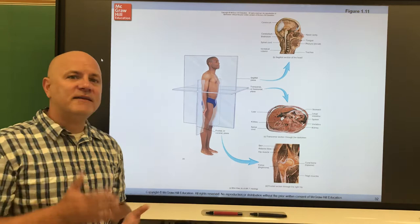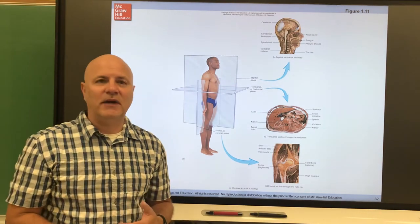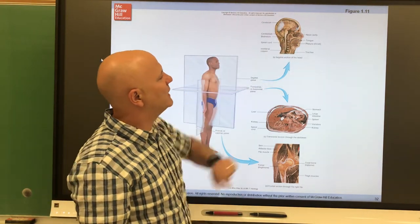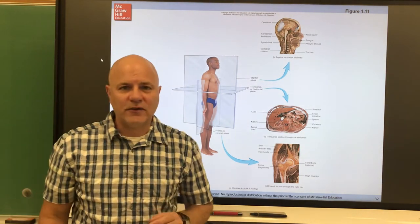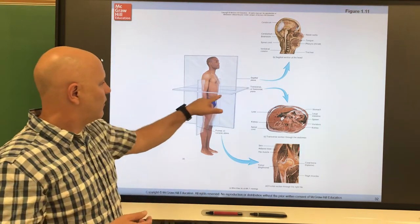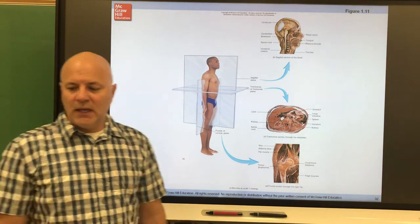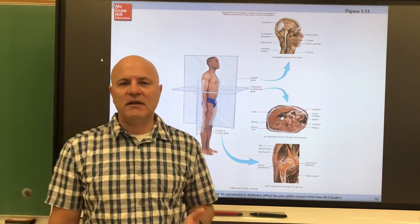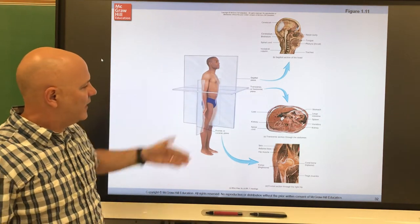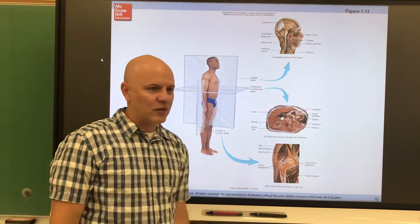Body sections are cuts made through the human body. A sagittal section is a lengthwise cut dividing the body into left and right portions. A transverse or horizontal section divides the body into superior and inferior portions. A coronal or frontal section divides the body into anterior and posterior portions.